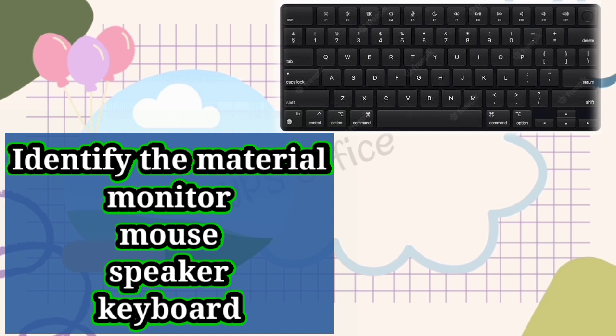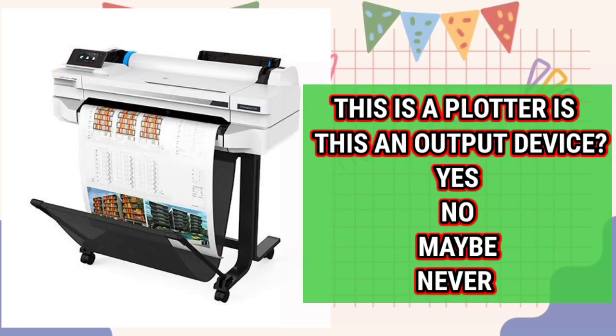Next question: identify the material — this material has numbers and alphabets. Is it a monitor, mouse, keyboard, or speaker? The correct answer is the keyboard, because keyboards have alphabets.